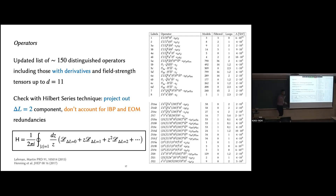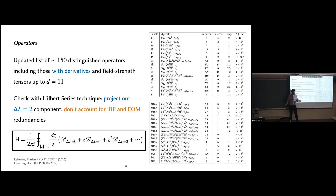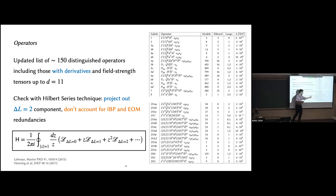We do this all the way up to dimension 11. We check completeness using Hilbert series techniques that give you the invariants. We specifically only wanted operators that violated lepton number by two units, and you can use the Hilbert series for that: normally it's used to project out singlets by contour-integrating and dividing by Z, picking out only the delta-L equals zero component. But if you divide by Z-cubed, you pick out only the delta-L equals two component. And if you don't want to account for redundancies from equations of motion or integration by parts, just don't include those spurions in the Hilbert series, and the counting is correct.